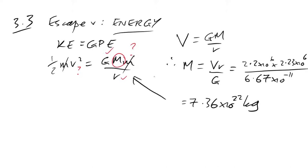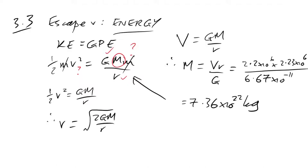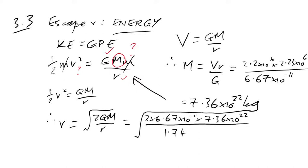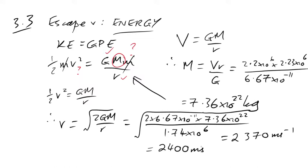Now substituting back: v = √(2GM/R). Using the given radius of the Moon, this gives 2,370 m/s, or to two sig figs, 2,400 m/s — not the easiest calculation.